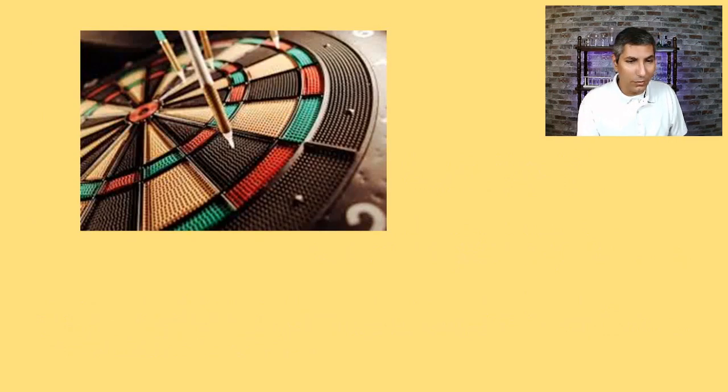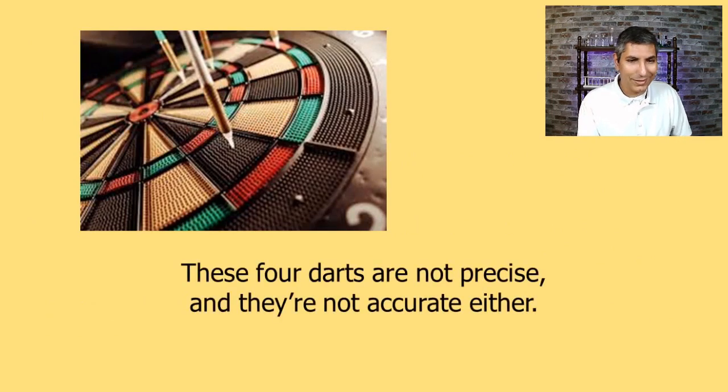How about these darts on the dartboard? Notice that they're all over the place. They're not really anywhere close to the bullseye and they're not really close to each other either. So they're not precise and they're not accurate. These are the types of results we try to avoid.